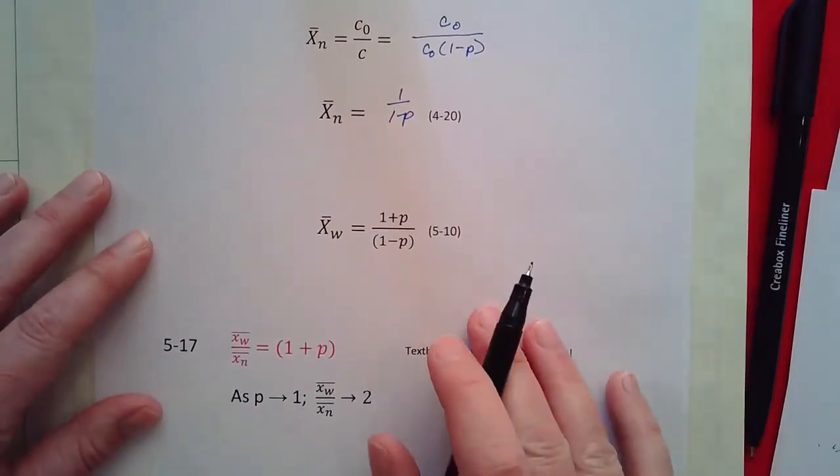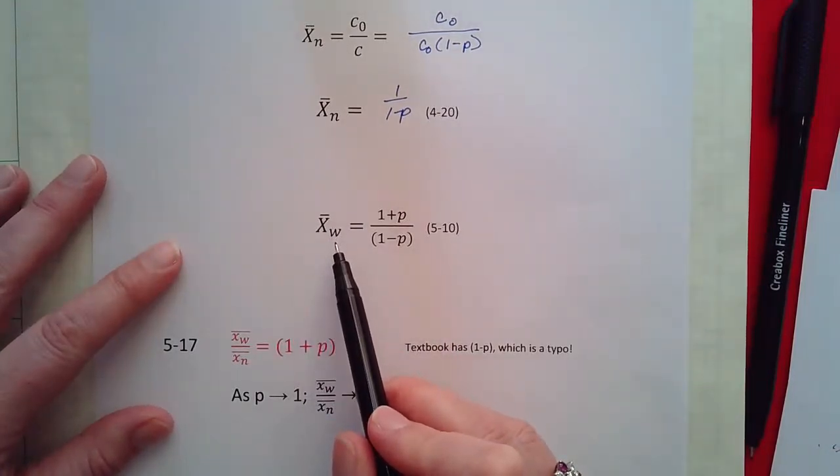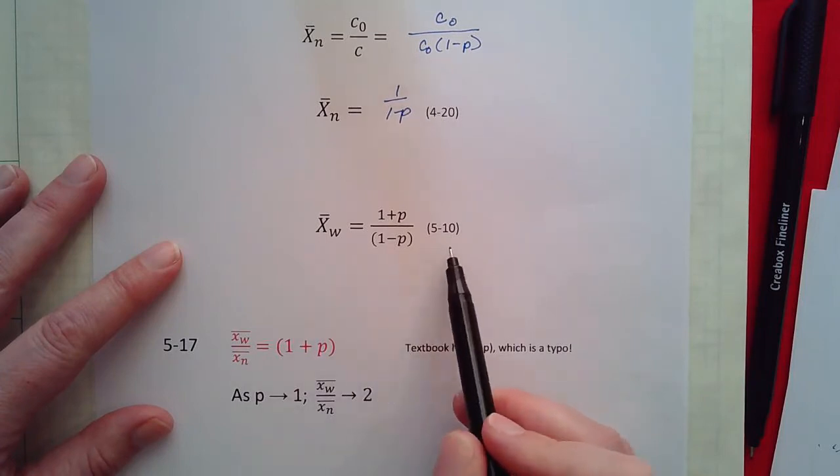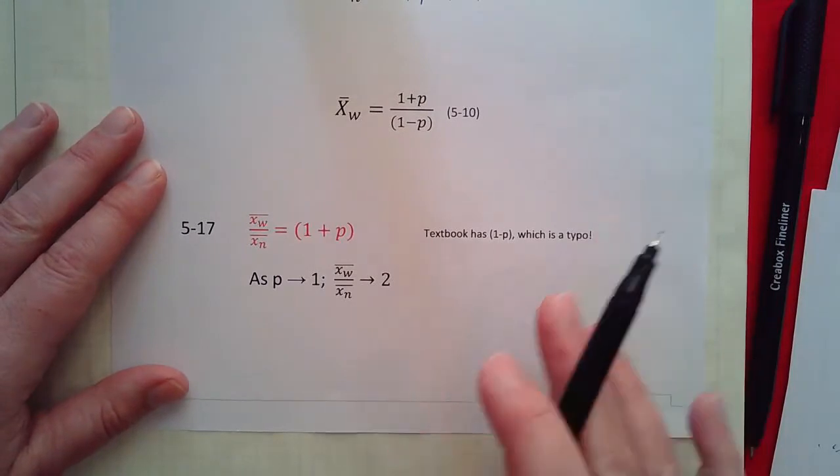We haven't derived and won't derive what the weight average degree of polymerization is. That's done in chapter 5. And we're not covering that this semester.